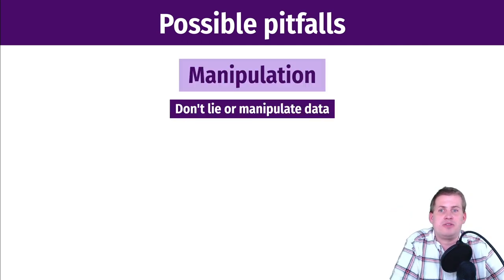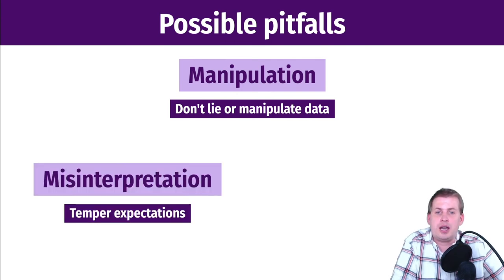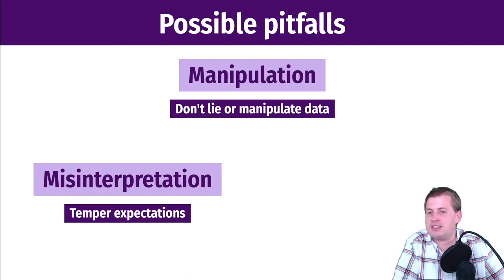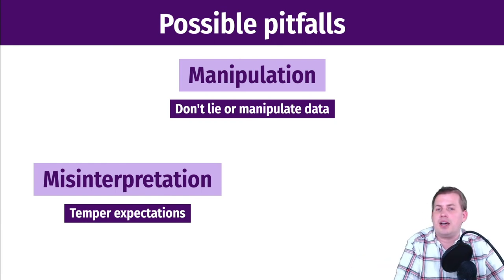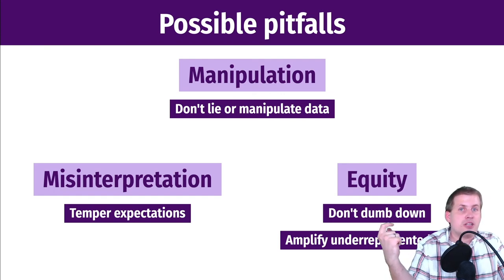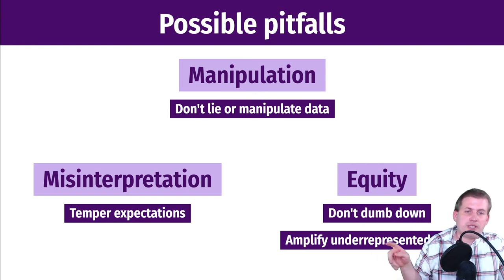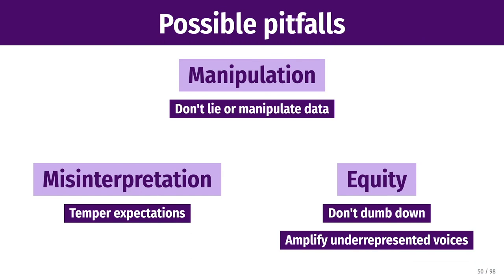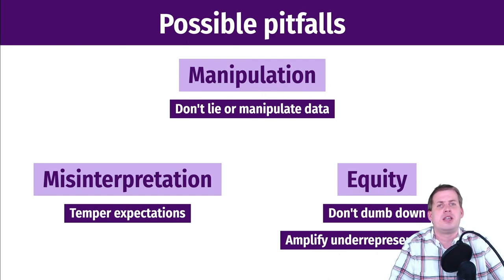But you want to avoid three pitfalls. First, the pitfall of manipulation — don't lie or manipulate the data to lead to a conclusion you want. Second, don't misinterpret the results or allow the audience to misinterpret them; temper expectations so the audience doesn't over-extrapolate. Third, the idea of equity — don't dumb the story down; instead, translate it. Also, amplify underrepresented voices and make sure you're citing people who are marginalized or forgotten in different research fields.